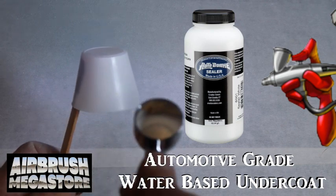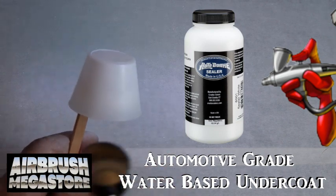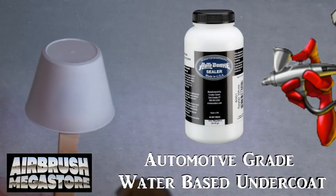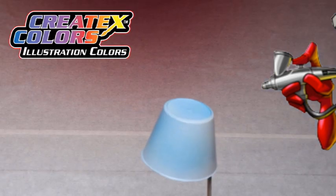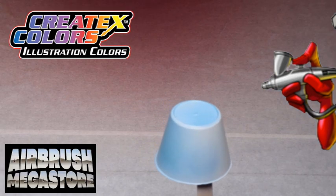For hard surfaces as an undercoat, we're using Autoborn Sealer 6001 White, drying between coats. Illustration Colors are transparent and popular.